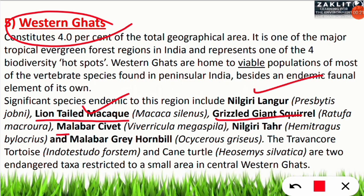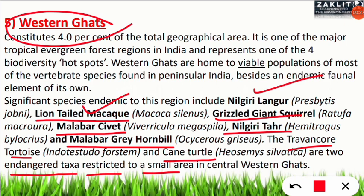Additionally, the Travancore Tortoise and the Cane Turtle are two endangered taxa restricted to a small area in the central Western Ghats. These two species are particularly important to note for the exam.